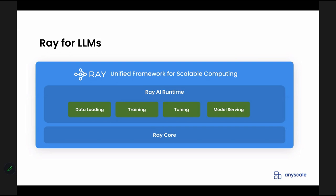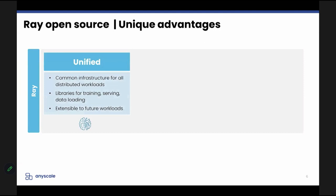Why do people choose Ray? There are three main reasons. The first is the unified nature — it is common infrastructure for scaling arbitrary workloads from data ingest to pre-processing to training to inference and serving. This also includes the fact that it's future-proof. AI is incredibly fast-moving, and many companies that have built their own machine learning infrastructure have found that their workflows are too rigid to enable new capabilities — if they want to do reinforcement learning or use graph neural networks, they don't have a way of doing that with their standard tooling. Ray being future-proof and flexible in general gives them that ability.